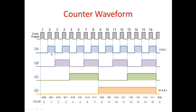In order to get one complete clock pulse cycle from QA, you can see two main clock cycles have passed — that is twice the time period. So if QA is getting twice the time period of the actual clock, taking the output from QA gives half the frequency of the original frequency.